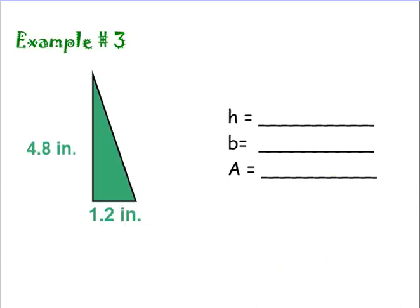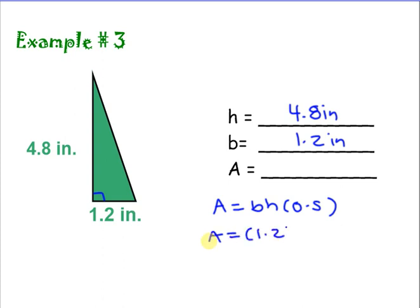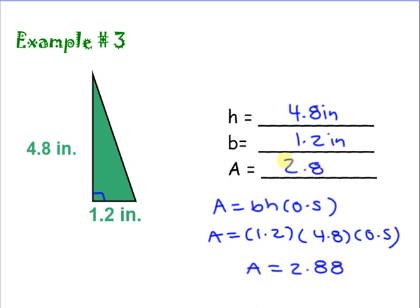Now we have another triangle — a right triangle. We have a vertical line and a horizontal line, and we could put a little box there. Our height is 4.8 inches and our base across the bottom is 1.2 inches. We write our formula: area equals base times height times 0.5. Area equals 1.2 times 4.8 times 0.5. Multiplying all of those together gives area equals 2.88. Our complete answer is 2.88 inches to the second power, because inches times inches is inches to the second power.